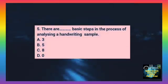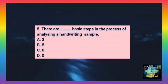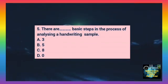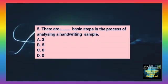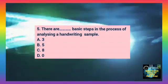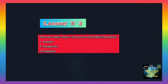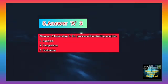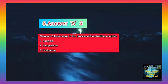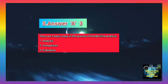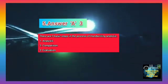Question number 5. There are how many basic steps in the process of analyzing a handwriting sample? Option A: 3. Option B: 5. Option C: 8. Option D: 0. The correct answer is A, 3. There are 3 basic steps in the process of handwriting analysis. First is analysis. Second is comparison. Third is evaluation.